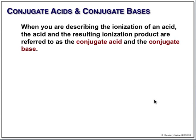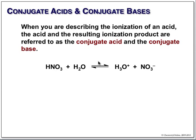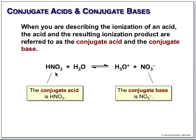In addition to the Bronsted acid-base nomenclature, we also need to understand the nomenclature of a conjugate acid and its conjugate base. In this reaction, nitric acid is going to function as the Bronsted acid. When it loses its proton, it will form its conjugate base. Going in the reverse direction, the nitrate anion is a Bronsted base — it will pick up a proton to form its conjugate acid.